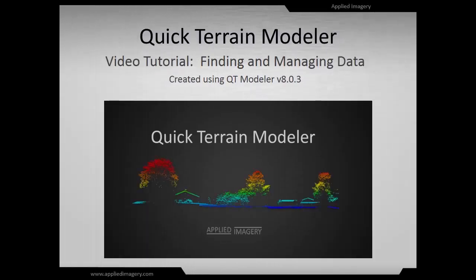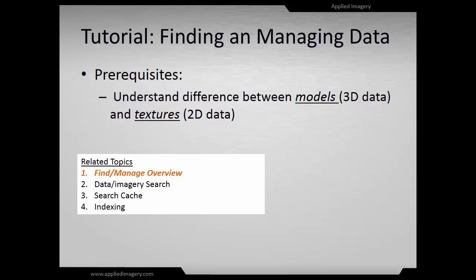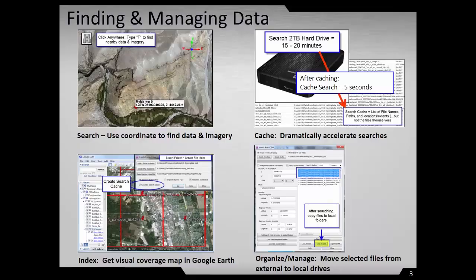Welcome to the QuickTrain Modeler video tutorial for finding and managing data. Prior to this video, you need to understand the difference between 3D data such as LAS files and DEMs, and 2D data such as GeoTIFFs and MrSID files. This is one of a series of videos on this topic. This video will cover searching for data based on a coordinate, accelerating your searches by creating a cache file, creating a visual coverage map with indexing, and organizing and managing your data.